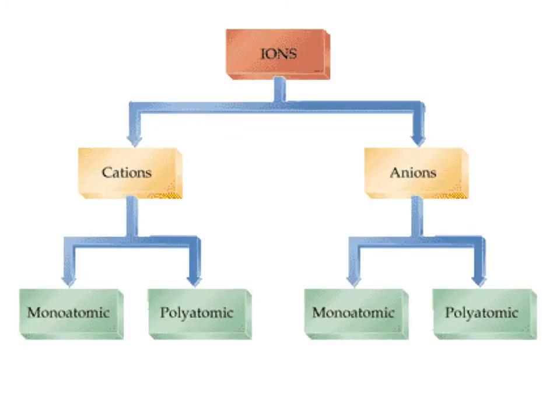As seen from this diagram, ions can be classified as cations, which are positively charged, and anions, which are negatively charged. Both types of ions can have two forms: monatomic and polyatomic.